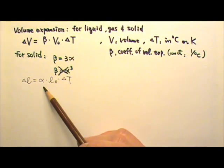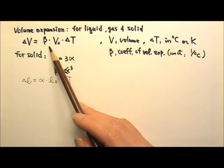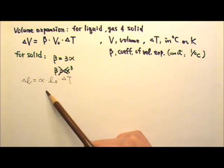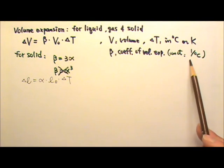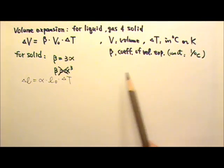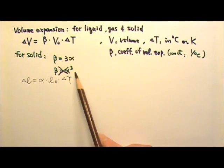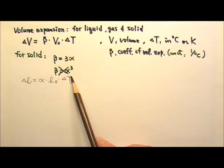If you look at alpha and beta, you can see that they both have one over degree Celsius as their unit, so cubing alpha would not work out unit-wise.